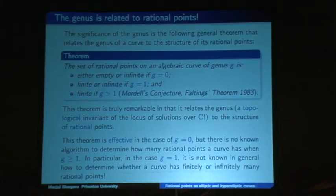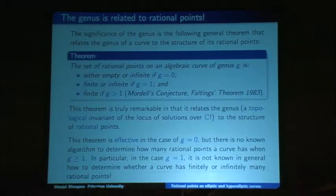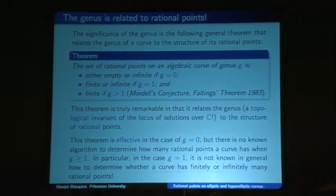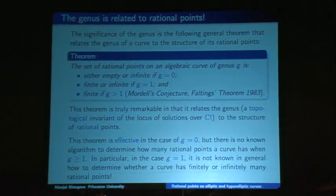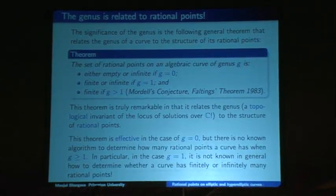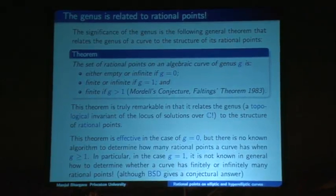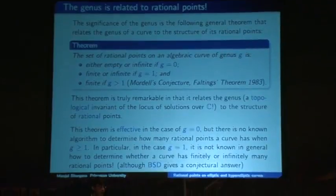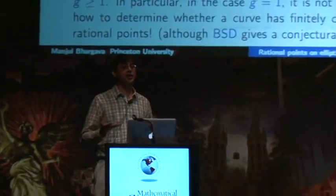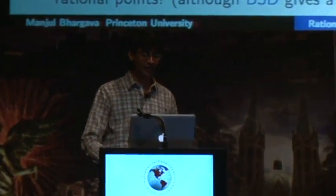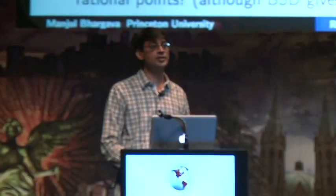In particular, when the genus is one, even for specific equations, it's not known in general how to determine whether a genus-one algebraic curve has finitely or infinitely many rational points. There's no algorithm to decide which case you're in. Although the Birch–Swinnerton-Dyer conjecture gives a conjectural answer, and that's one of the reasons for its importance — it settles the question of whether you have finitely or infinitely many rational points in the smallest genus case where we don't yet know how to determine how many rational points exist.